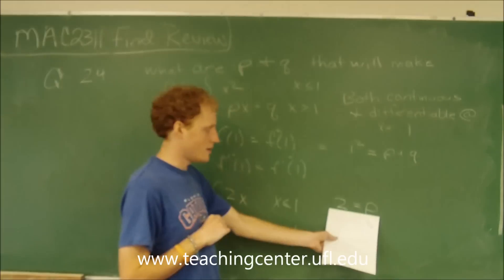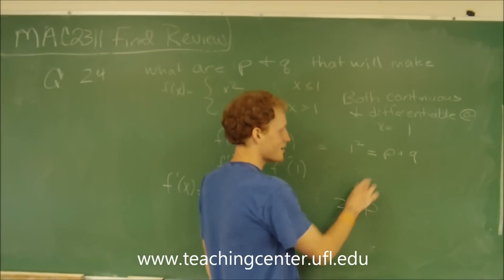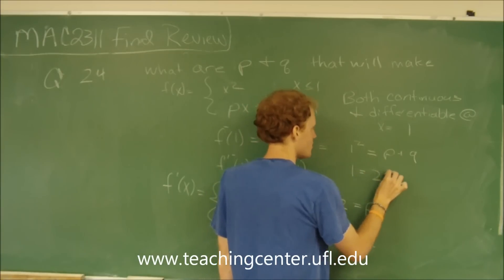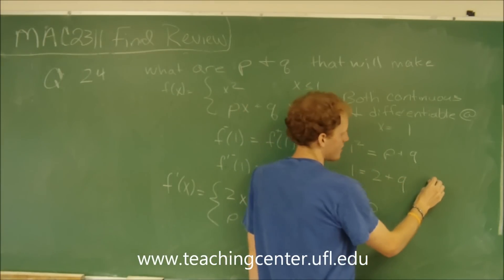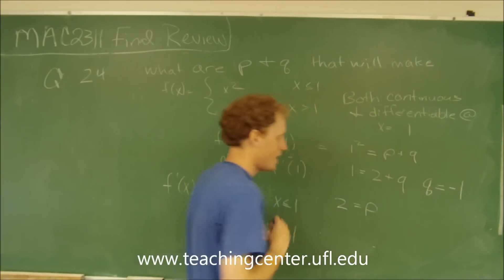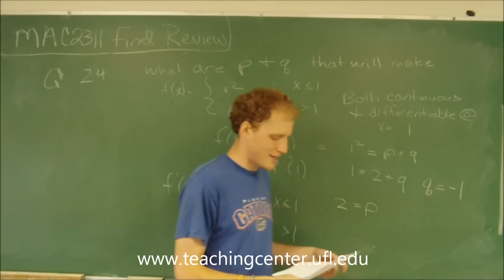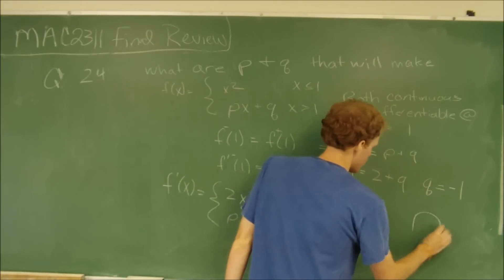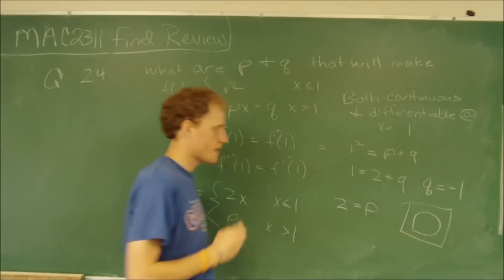Since we know p equals 2, we can substitute into the continuity equation and get 1 equals 2 plus q, so q equals negative 1. So if p equals 2 and q equals negative 1, that is answer choice D. And that's the answer.